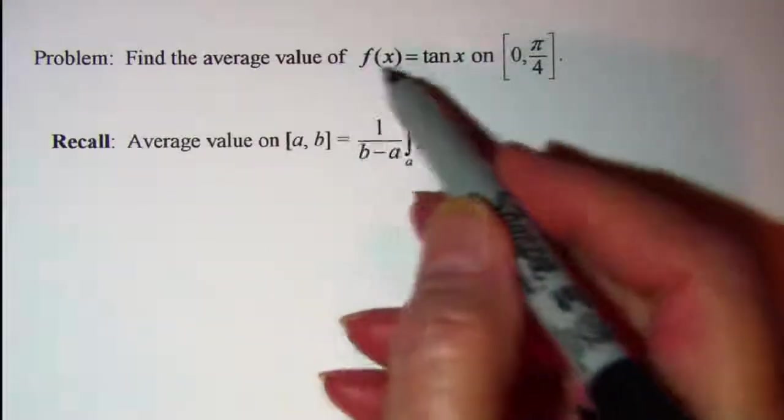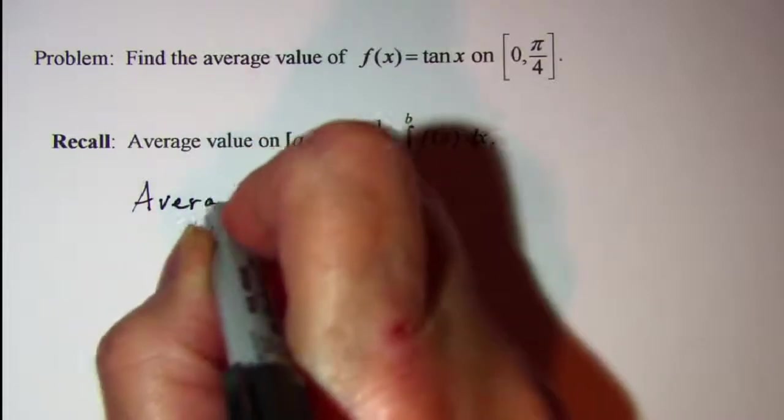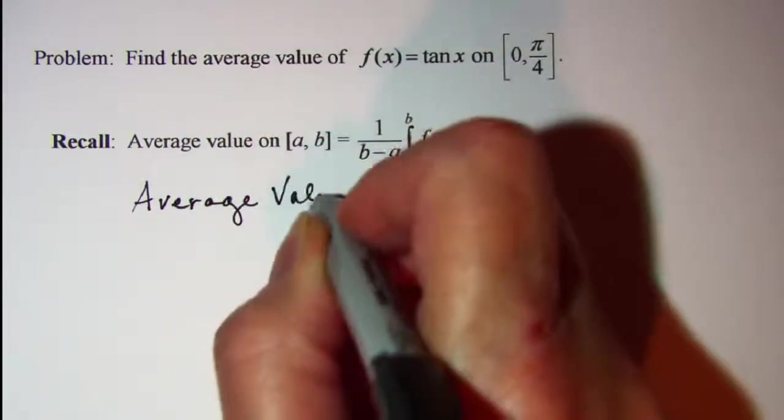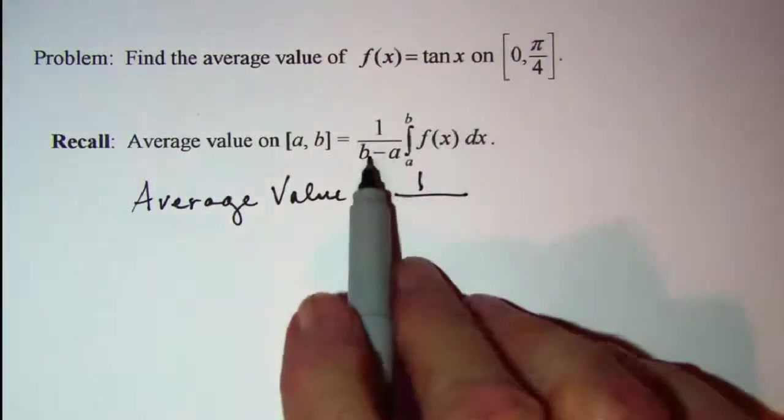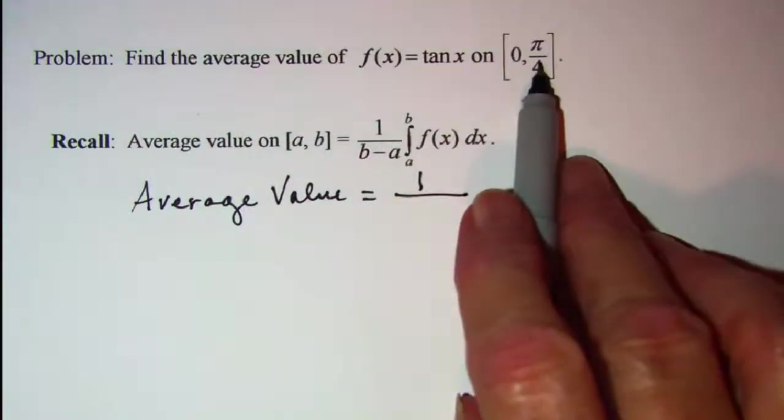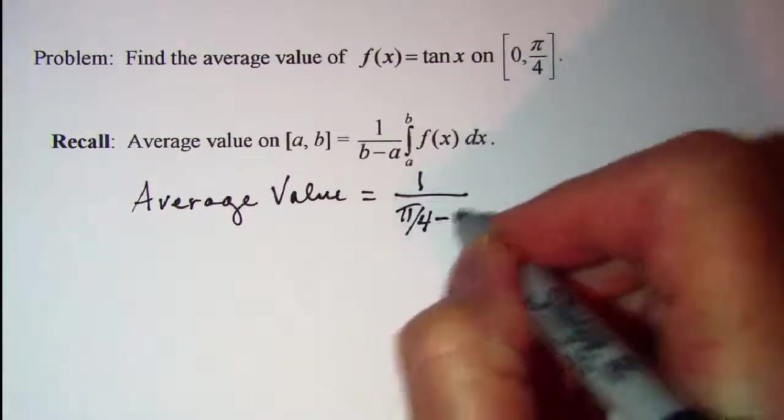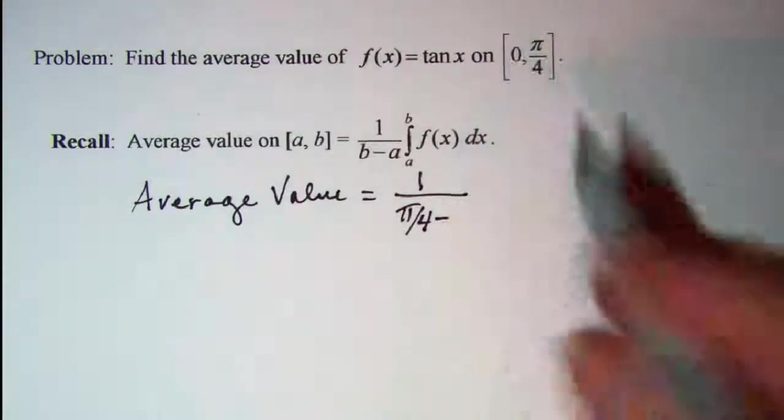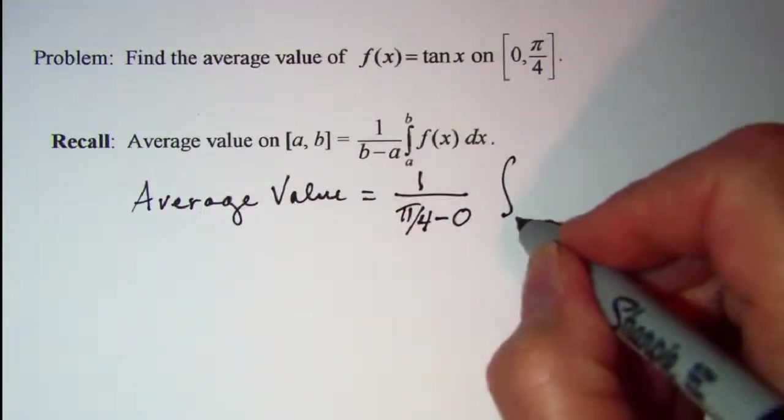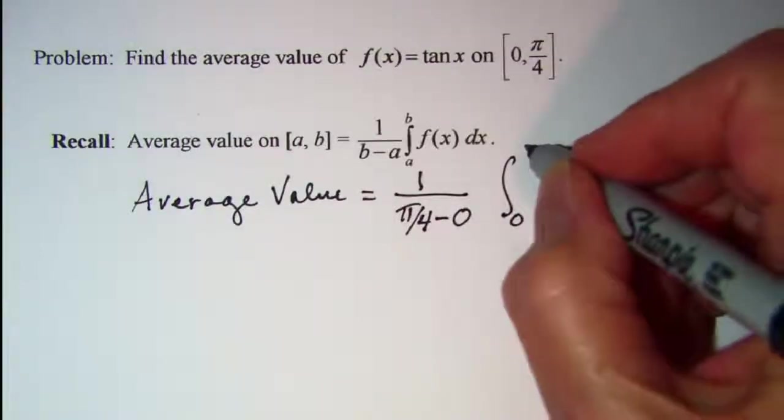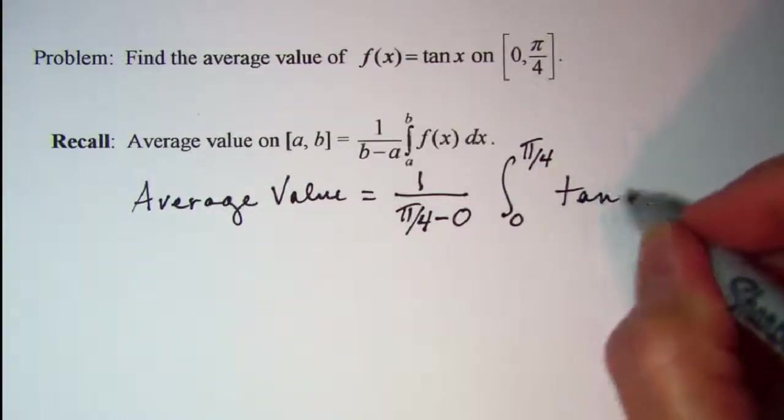So our average value for this function is equal to 1 over our b value, which is pi over 4, subtract our a value which is 0, times the integral from a to b, so from 0 to pi over 4, of tangent x dx.